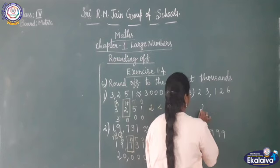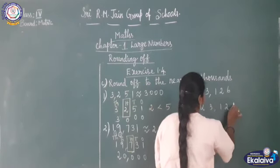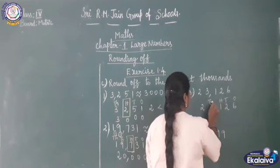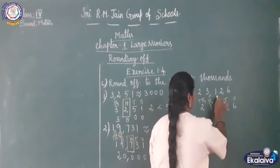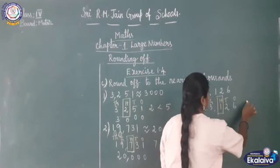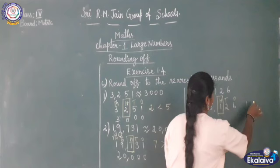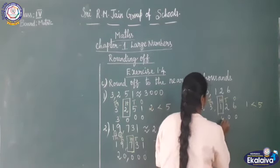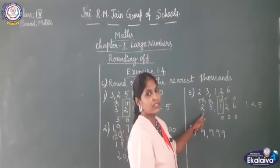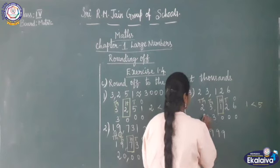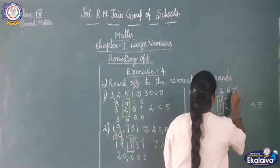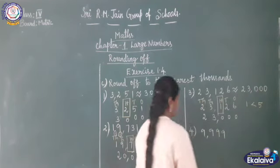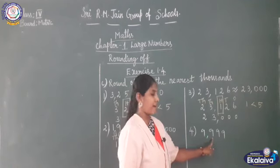Next: 23,126. Write the place value — ones, tens, hundreds, thousands, ten-thousands. Check the hundreds place. The value is 1. 1 is less than 5, so write 0 for ones, tens, and hundreds place, then write the remaining digits as they are: 3 and 2. The answer is 23,000.